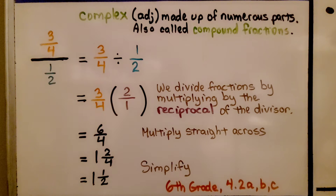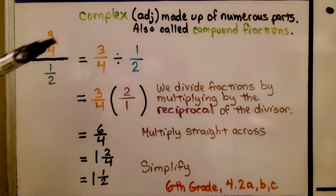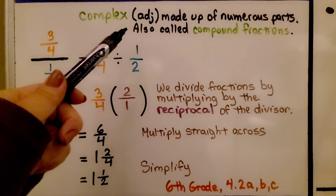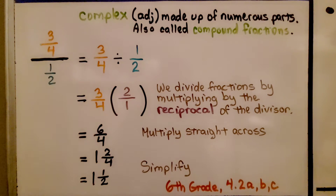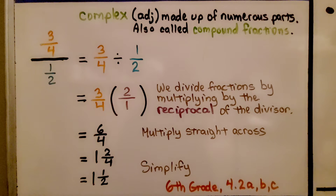Complex fractions are fractions that have a fraction in its numerator, denominator, or both. Complex is an adjective — it means made up of numerous parts, so there are numerous parts here. They're also called compound fractions.